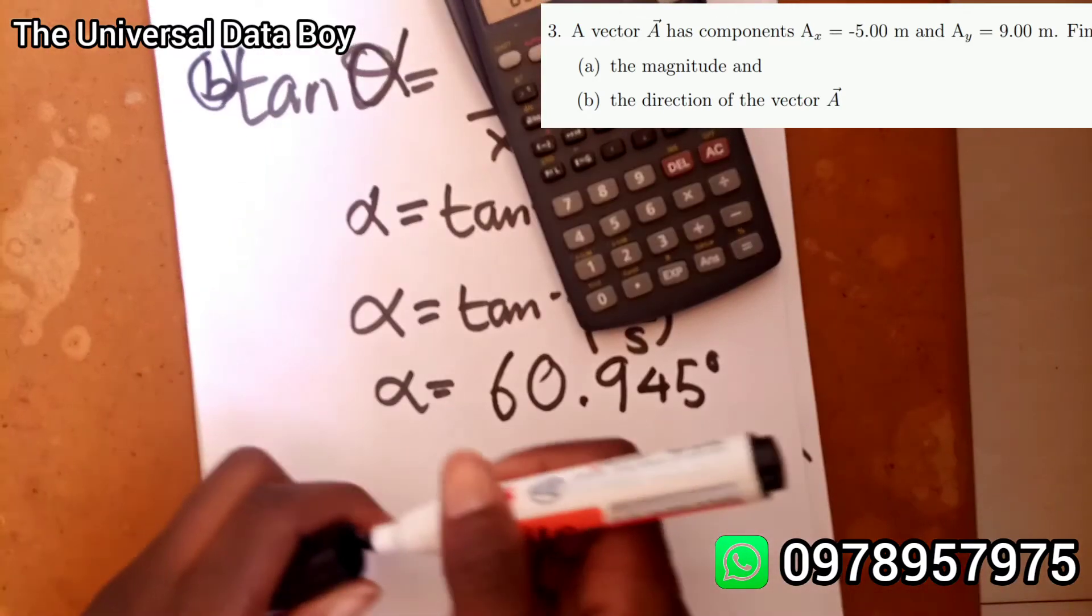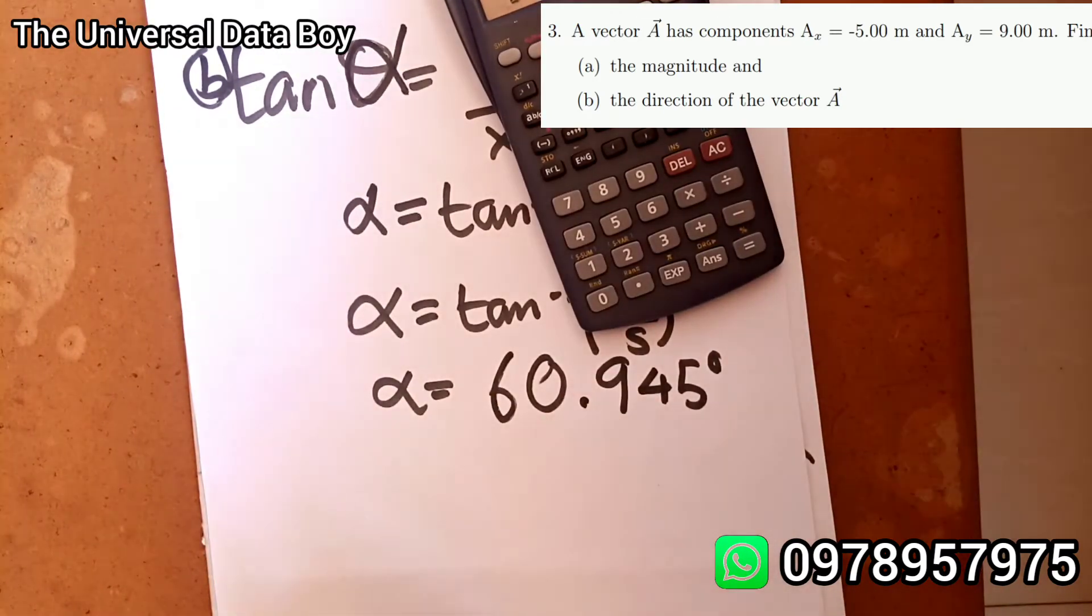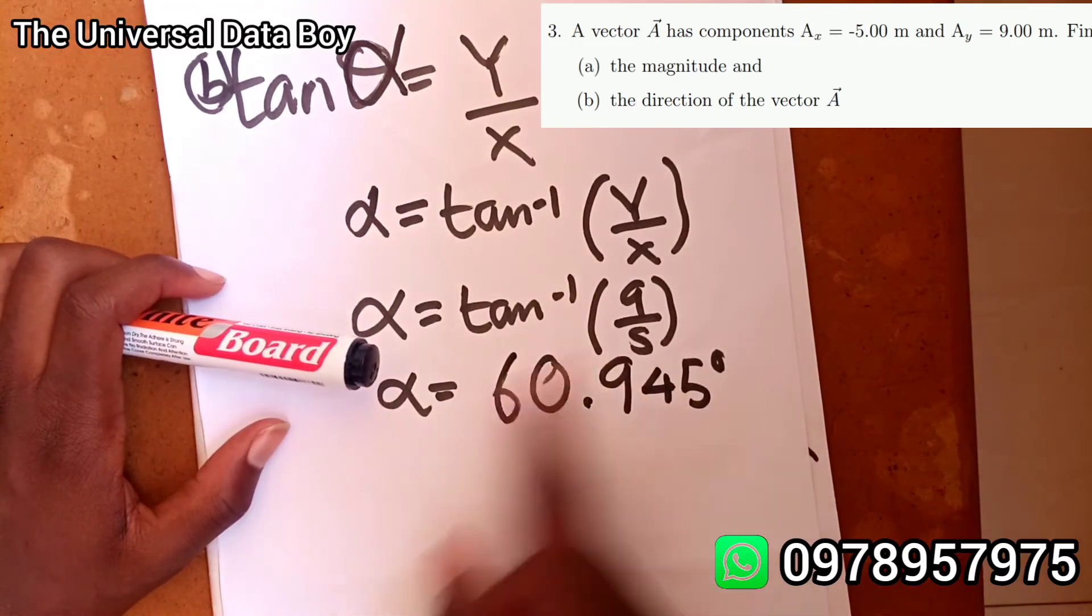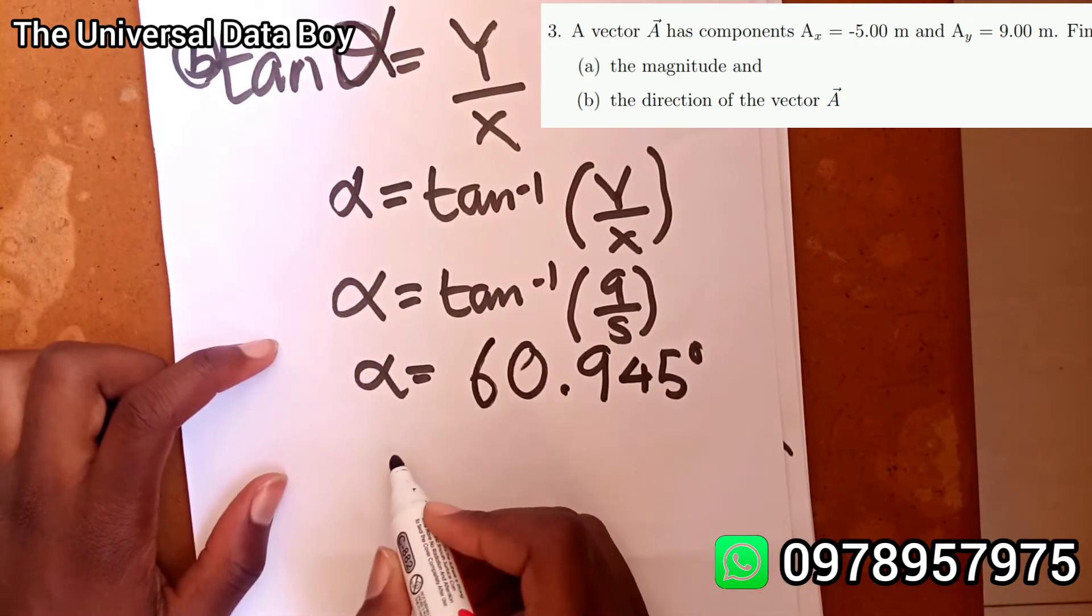So we found our direction. Our direction was question b and our magnitude was question a. That's all for this one, it's very easy. Subscribe to the channel, also comment, like and share with others that are going to find this helpful.